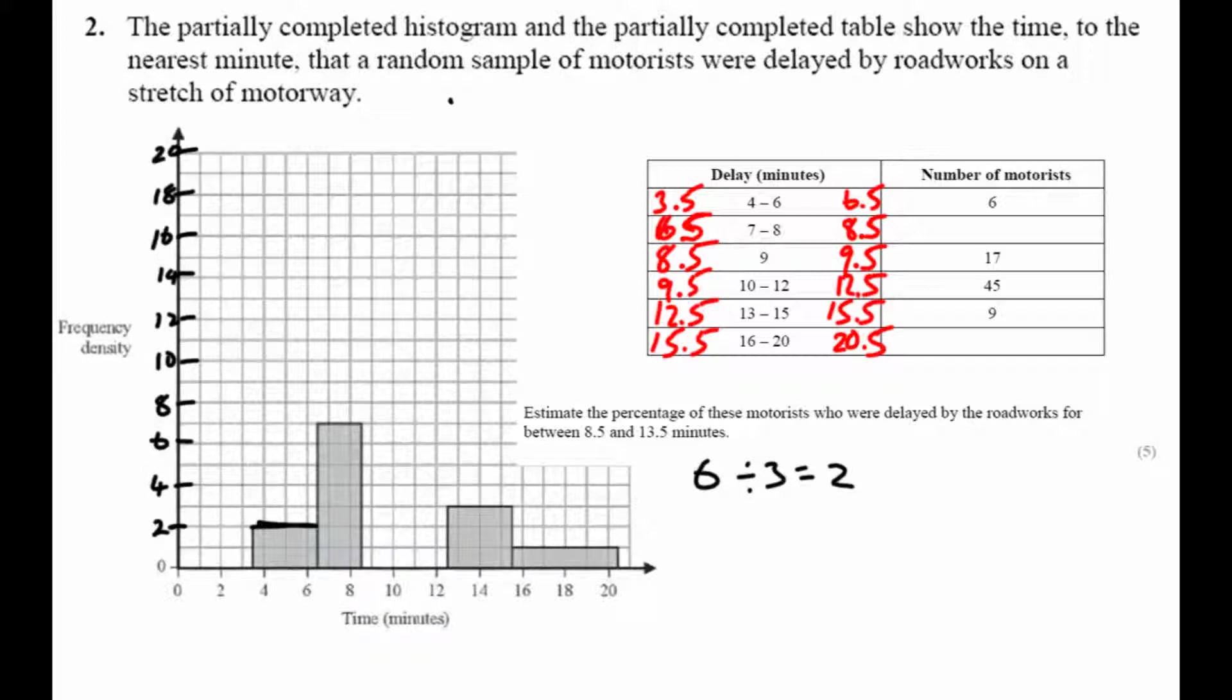Can I use that to find these missing frequencies? So the second bar, to find its frequency, I'm going to take the class width, which is 2, and multiply it by the height, which is 7. 2 times 7 gives me 14, so the frequency here would have been 14. And we'll jump straight to that last class. The class width there is 5 and the height is 1, so the frequency must be 5.